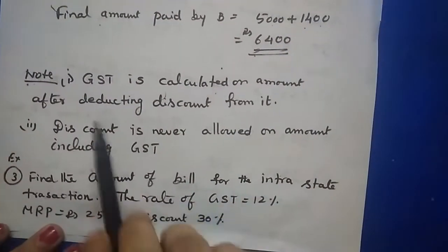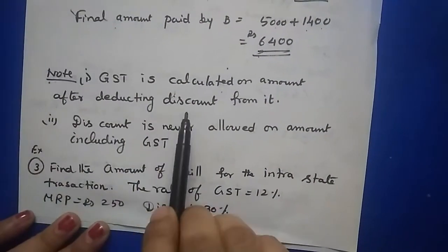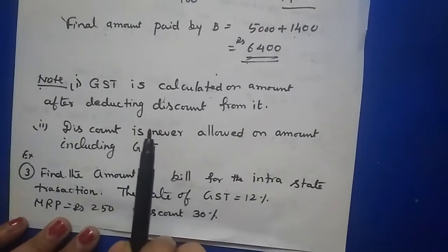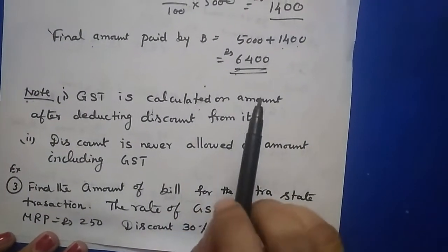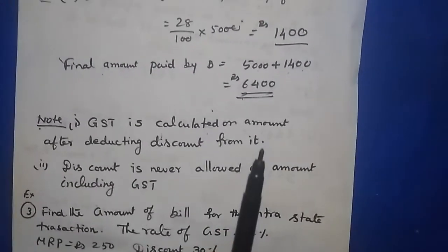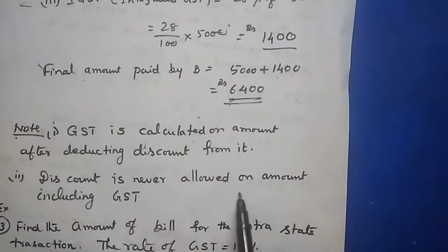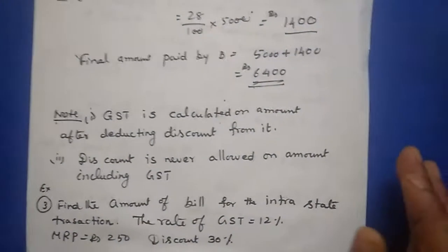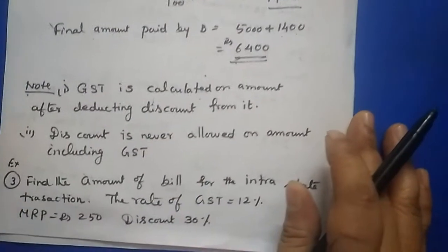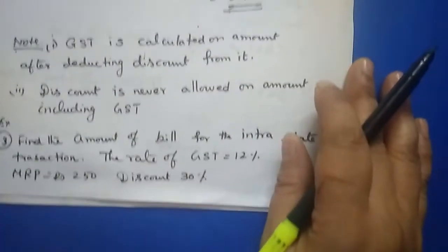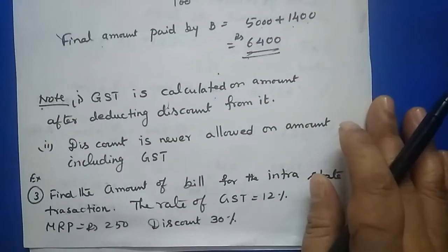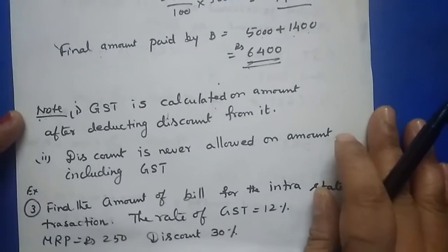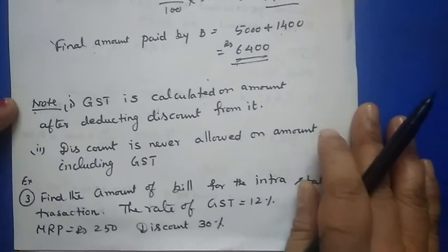Important rule: GST is always calculated on the amount after deducting the discount — that means on the discounted price only. Discount is never allowed on the amount including GST. First subtract the discount from the list price, and then calculate the tax.